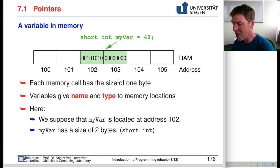Each memory cell has a size of one byte. Variables have a name, myVar, and a type, short int, as well as a value, in this case 42. The way this value is represented in memory is also managed by the type.